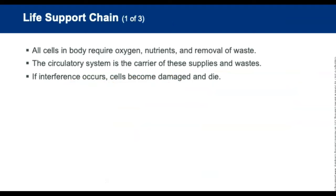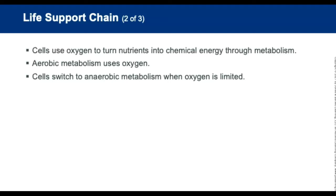The life support chain: cells require oxygen, nutrients, and removal of waste; the respiratory and circulatory systems are the carriers of these supplies. Cells use oxygen to convert available nutrients into chemical energy through metabolism — aerobic metabolism using ATP. When oxygen is limited, cells switch to anaerobic metabolism, producing lactic acid as a damaging waste product. As lactic acid and other waste accumulate, the area becomes toxic and cells can die.